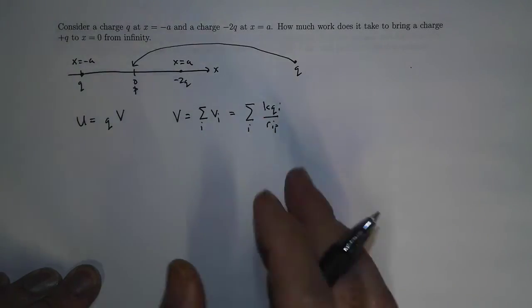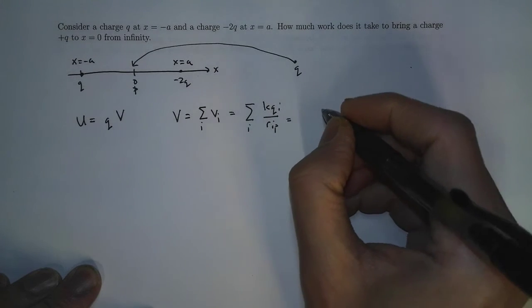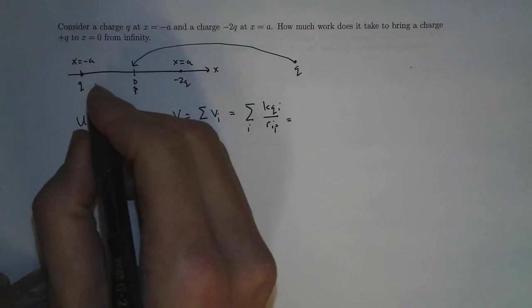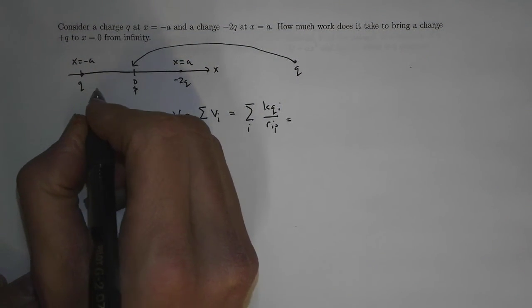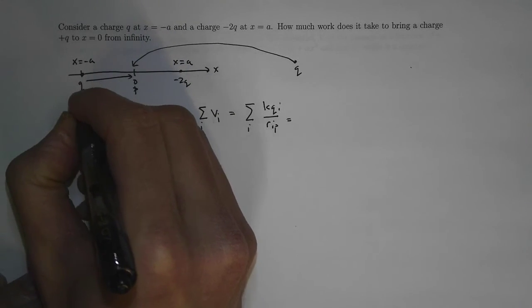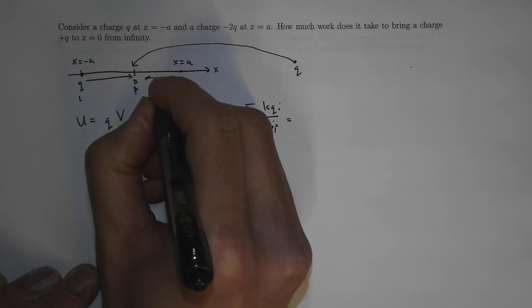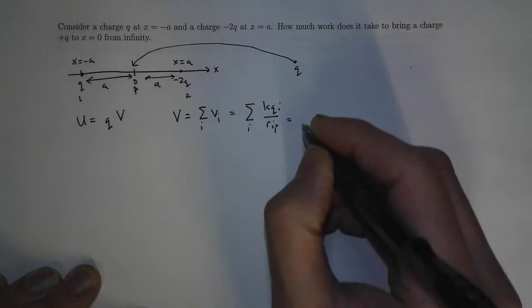Now this is just a sum over all charges i. In order to do this, let's draw what this position is. This is some distance here. This is charge 1, this is charge 2. This distance here is distance a, and so is this.